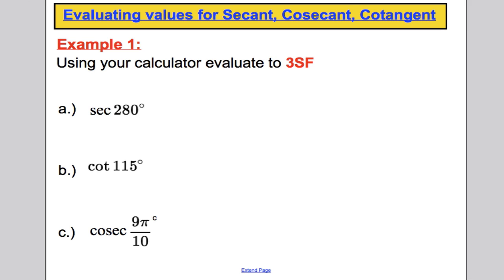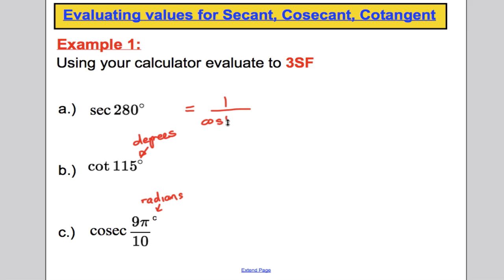Next, we're going to evaluate these functions at particular values using a calculator. We need to work out sec 280°, cot 115°, and cosec 9π/10 radians. Because most calculators don't have sec, cot or cosec buttons, we just use their definitions. Sec 280° is 1 over cos 280°, so type 1 divided by cos 280 in degrees mode — to three significant figures, you get 5.76.